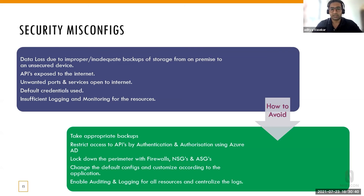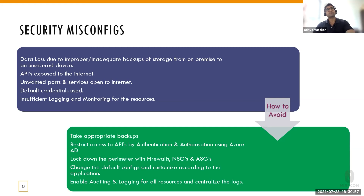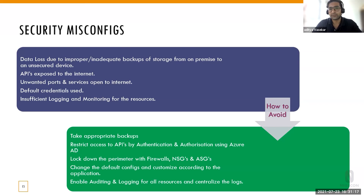Change the default configs — Azure provides all the security baselines and best practices for every resource, and the documentation is pretty easy to follow. Then enable auditing and logging for all resources and centralize the logs. This is pretty important. Many people don't do it properly. Whenever you enable auditing and logging for any resource, you need to make sure you're centralizing those logs. If you're collecting all the logs and sending them to different workspaces, it might not give you a proper analytical view — you cannot analyze those logs. Make sure you centralize all of them.